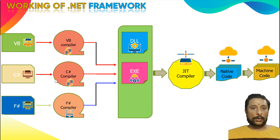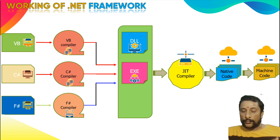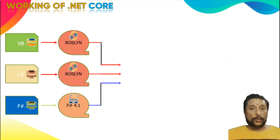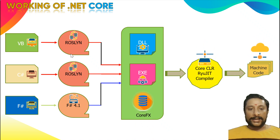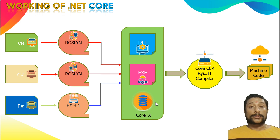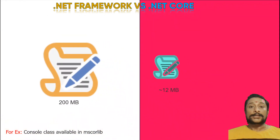In .NET Framework, you get multiple code files with individual compilers that convert to DLL/EXEs, and a JIT compiler converts to native machine code — that is how your code works. In .NET Core, the Roslyn compilers handle individual programs. You have CoreFX as the library for cross-platform compatibility, and a specialized compiler called CoreCLR that converts to machine code — there is no native code concept like in .NET Framework.